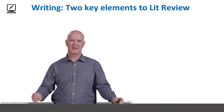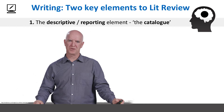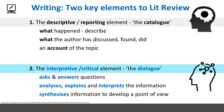On to the writing component of the review. There are two key elements. One is a descriptive or reporting element, where you talk about what happened — you describe what the author has found, what they discussed, what they did. It's an account. The second crucial aspect of the literature review is an interpretive or critical element, the dialogue, where you ask and answer questions of the text. You analyze, you interpret, you synthesize, you bring together information.